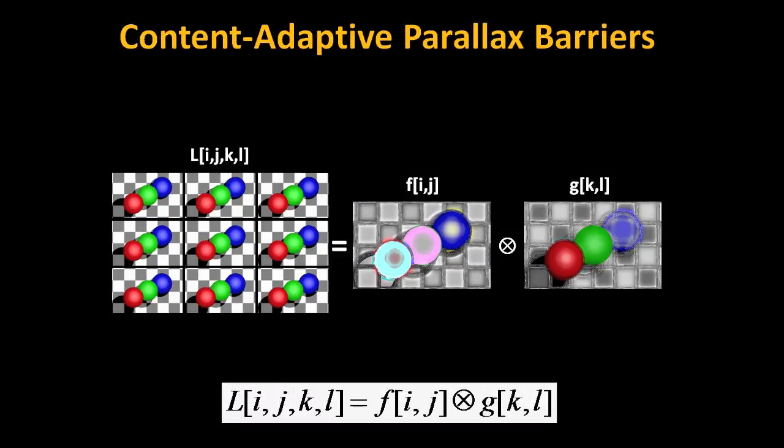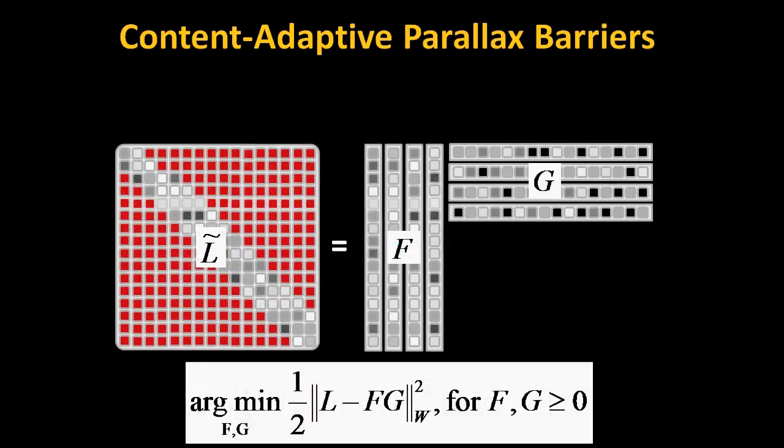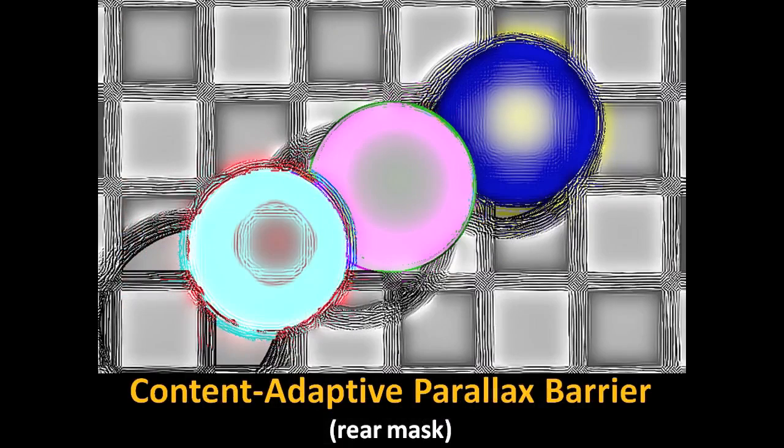In this work, we cast light field display as a matrix approximation problem, leading to new content-adaptive barriers.